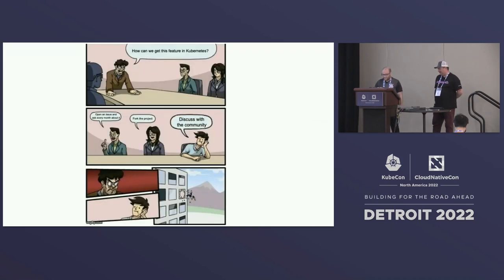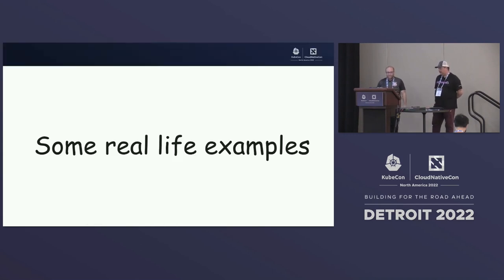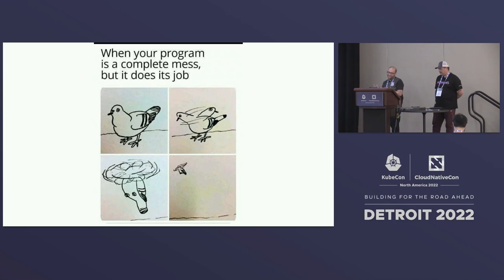So how can we get a feature into Kubernetes? Usually some folks just say 'hey I need this thing,' they open an issue and keep poking developers every month: 'is this ready? My boss is asking me is this ready?' And then some folks just say maybe we can fork the project — but if you fork Kubernetes you're going to have some problems because maintaining Kubernetes is not that easy. The idea is discussion with the community — that's the way to get that done. I decided to bring some real life examples so you can see how this goes and what can go wrong.